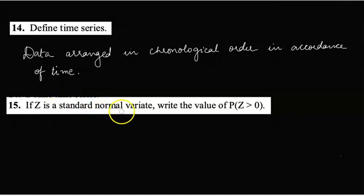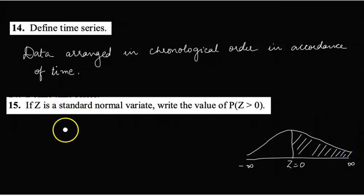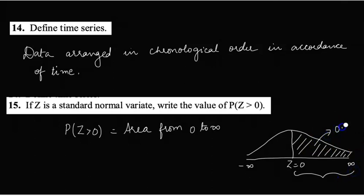Fifteenth: if z is a standard normal variate, write the probability of z > 0. This is a standard normal curve. The center line is z = 0. The left extreme is -∞ and right extreme is +∞. So z > 0 is the area from 0 to infinity. Probability of z > 0 is the shaded area. All of you are aware that the total area from -∞ to +∞ is 1. So the area from 0 to infinity is 0.5.